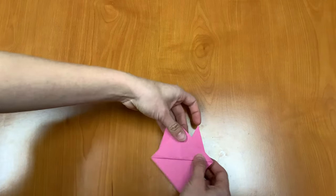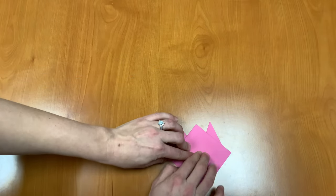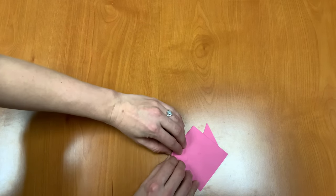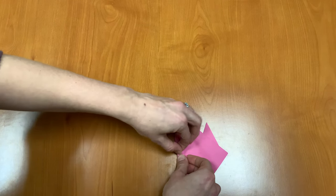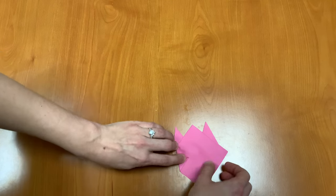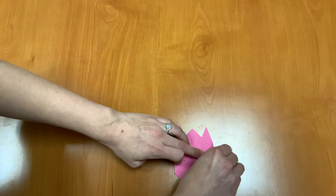Now we're going to turn our puppet over. Next we're going to fold in the edges. So we'll take the corners and we'll just fold them in like so. Left one and right one.